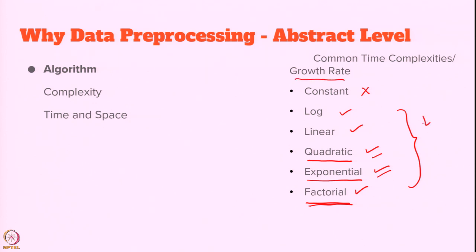Till now I used the word time — that is time complexity. Similarly, there is something called space complexity in every algorithm. For a given dataset, based on the algorithm, some data will also be stored in the computer. If the data takes more space to store, and the computations are very high — or even if computations are low but the space required is very high — and if that space increases quadratically or exponentially based on the data, then even those algorithms we may not use. Because if the data is huge, you cannot store that much data in your machine, which has its own limitations.